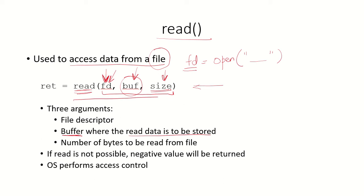This system call will allow the process to read from the file. If this system call is successful, then a positive value will be returned. If read is not possible, then a negative value will be returned. Also the OS will take care of access control — it will check whether the process has the permission to read from the file or not.